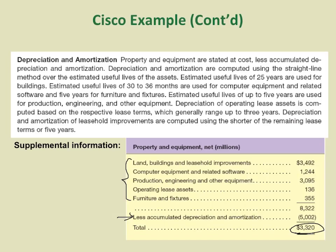In a paragraph above the schedule, they discuss additional information. For example, the depreciation method they use is the straight-line method, and they apply different estimated useful lives for different asset categories: 25 years for buildings, 30 to 36 months for computer equipment and related software, and 5 years for furniture and fixtures. All these estimates are disclosed in the footnote.